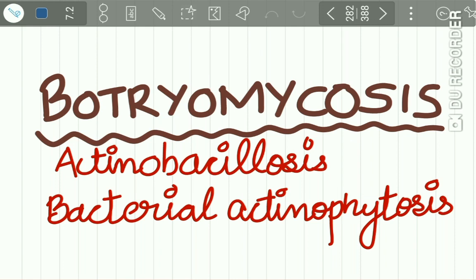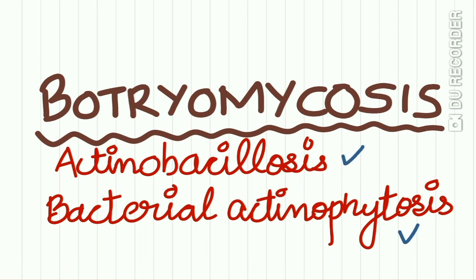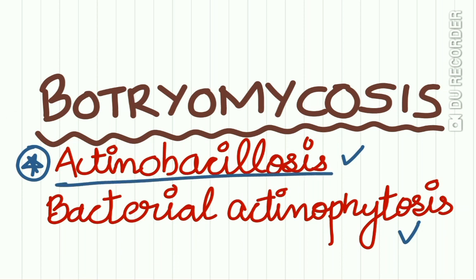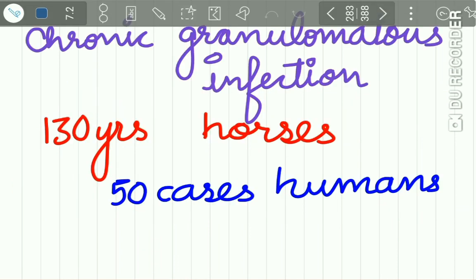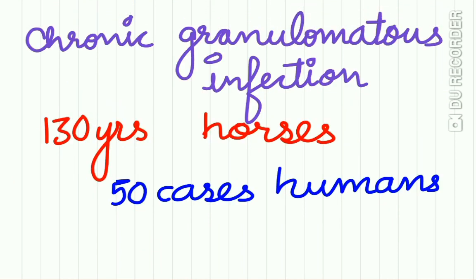Botryomycosis — the other names are actinobacillosis and bacterial actinophytosis. Remember the alternative name: actinobacillosis. Don't get confused between actinomycosis, which we have already studied in the previous lecture, and actinobacillosis. Actinobacillosis is nothing but botryomycosis. Botryomycosis is a chronic granulomatous infection which was recognized 130 years back and was first found in horses.